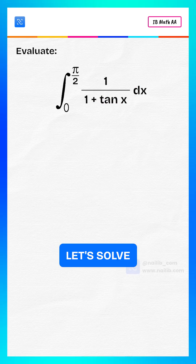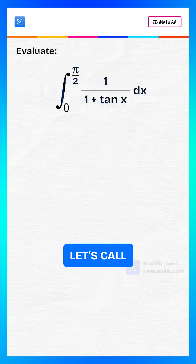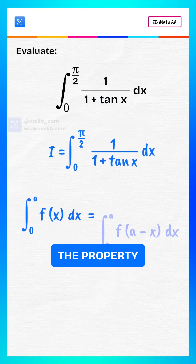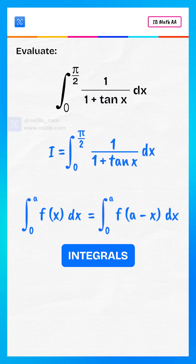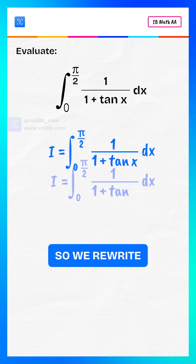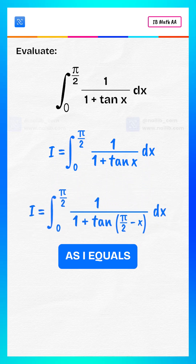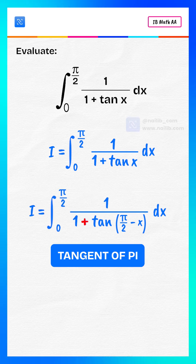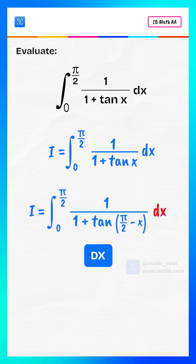Let's solve this step by step. Let's call the integral i. Now use the property of definite integrals — there's a powerful identity here. We rewrite the integral as i equals the integral from zero to pi by two of one divided by one plus tangent of pi by two minus x, dx.